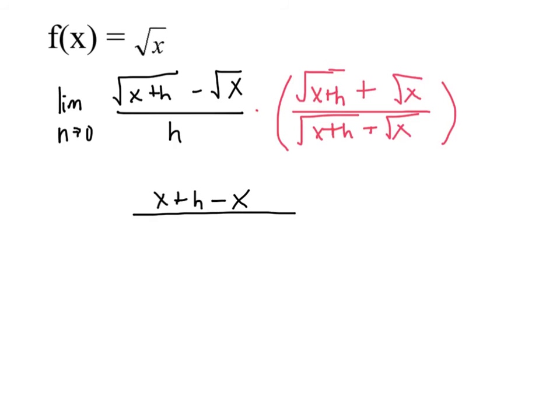The bottom, I'm not going to multiply out. I'm just going to leave it as it was. So we write that. Now, x minus x is 0. That's gone.